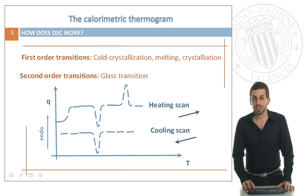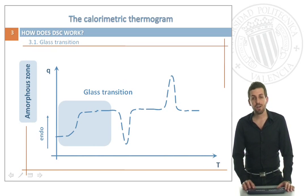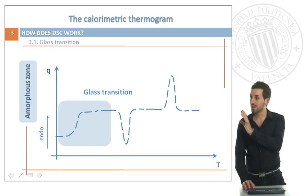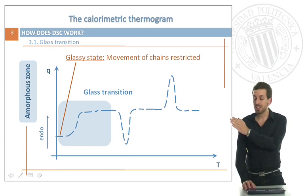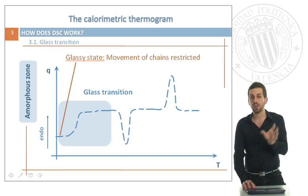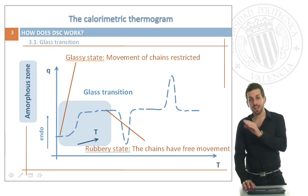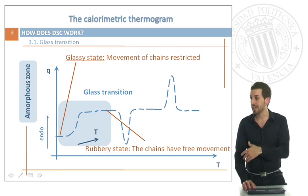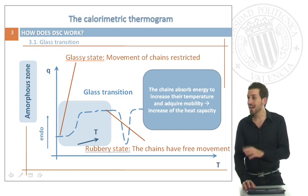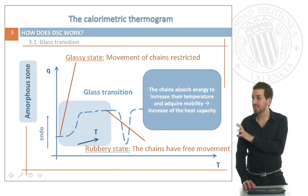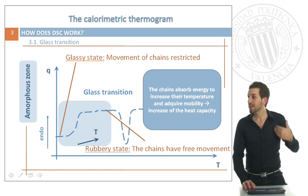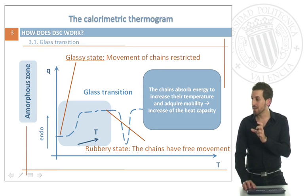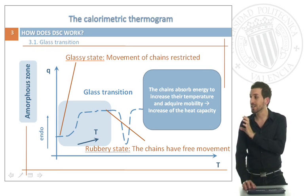This is the summary of the transitions that we can see. How does our DSC work? We are going to start with the amorphous zone and the glass transition. At ambient temperature we have our polymer in the glass state, which means that the movement of the chains is restricted. As we increase the heat, we will obtain a solid polymer in the rubbery state, meaning the chains have free movement. What has happened in our DSC is that the chains are absorbing energy from the DSC to increase their temperature and therefore acquire mobility. This will be seen in the response of our DSC as an increase of the heat capacity.